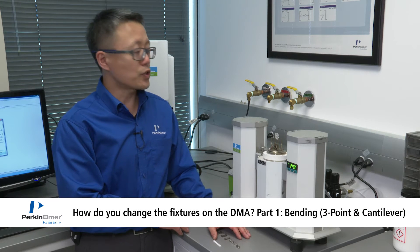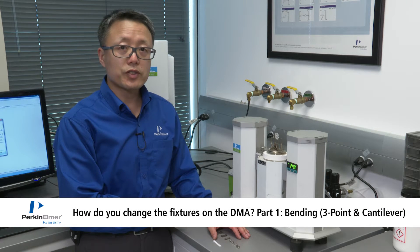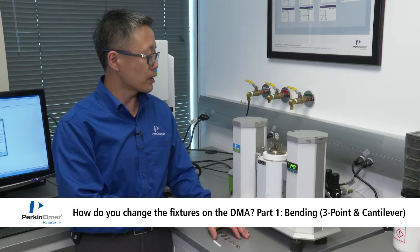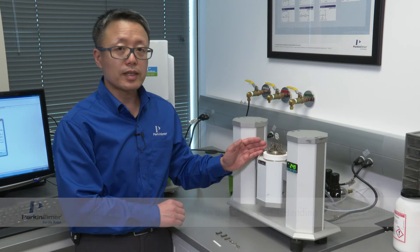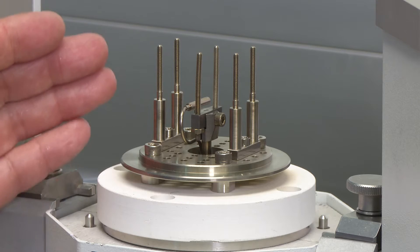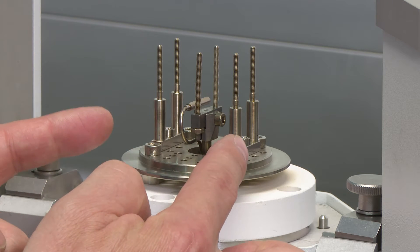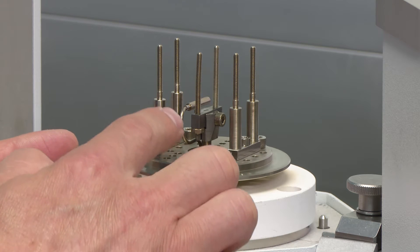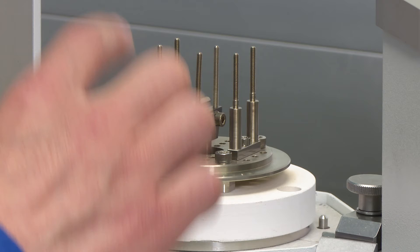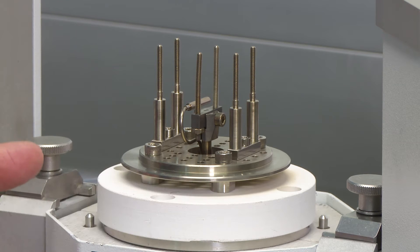This video is going to show you how to change fixtures on the DMA8000 model. This is the sample area. It has two fixed pillars and a moving probe connected to the LEDT inside the DMA.